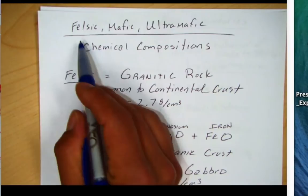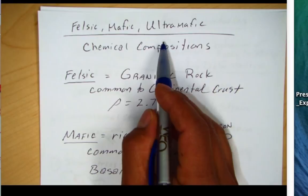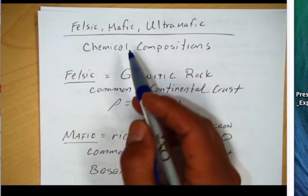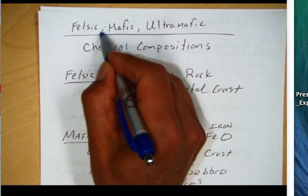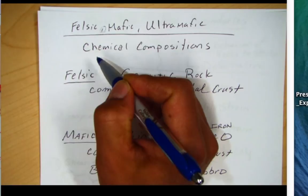Then we get to plate tectonic boundaries. Looking over here at our document camera, three words: felsic, mafic, and ultramafic. These are words geologists use to describe the compositions of rocks in a general sense. There's one other category called intermediate, which fits in the middle between mafic and felsic. When we start doing igneous rocks, we'll look at intermediate rocks.